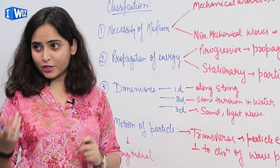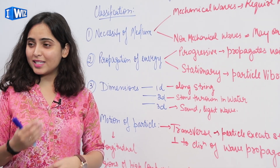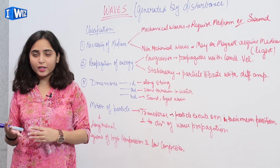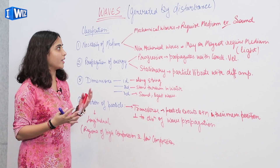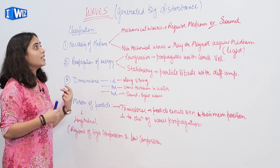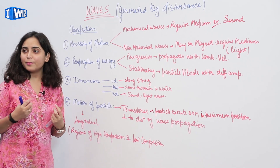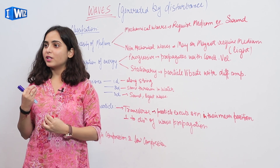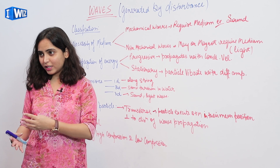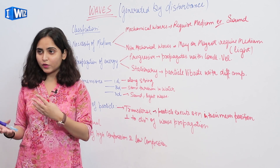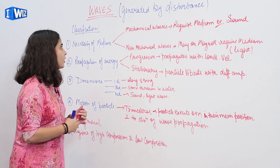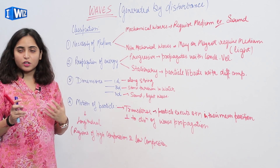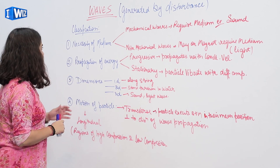The basic definition — how we can understand waves — is that a wave is generated by a disturbance. When there is a disturbance, a wave is generated. So, let's study the classification of waves.